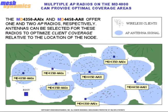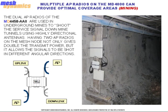For deployments with clusters of high client densities or unusual client distributions, multiple AP radios on the mesh node can be beneficial in achieving sufficient coverage. The MD-4350-AAIX and MD-4458-AAII offer one and two AP radios respectively. Antennas can be selected for these radios to optimize client coverage relative to the location of the mesh node. The dual AP radios of the MD-4458-AAII are used in underground mines to shoot the service signal down the mine tunnels using highly directional antennas, giving double the transmit power and allowing signals to be shot in different angular directions.